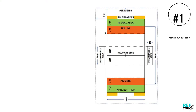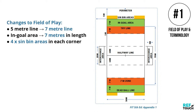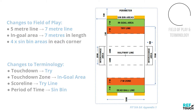First up, let's have a look at the field of play and terminology. There are some big changes here with the 5 metre line being moved out to 7 metres. There are also now 4 sinbin areas placed in each corner of the field — this is important, we'll talk more about these shortly. There are also some changes to terminology: touchdowns are now called tries, the touchdown zone is called the in-goal area, the score line is now the try line, and a period of time is now called a sinbin.